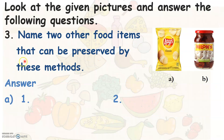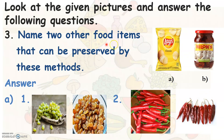Can you name two other food items that can be preserved by these methods — by drying and by pickling? Food items preserved by drying include fresh grapes: when all the water content is removed, we can convert them into raisins. Likewise, fresh red chillies when dried become dry chillies. Both raisins and dry chillies can be kept fresh for a longer period of time.